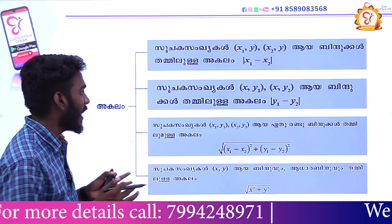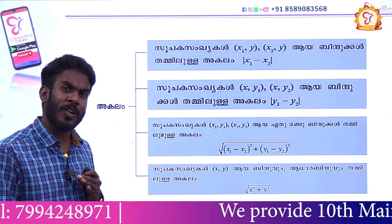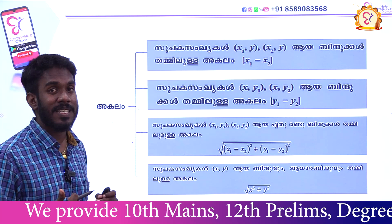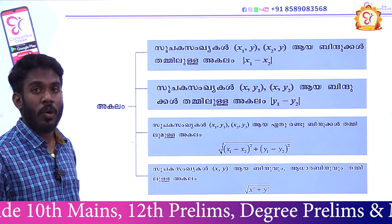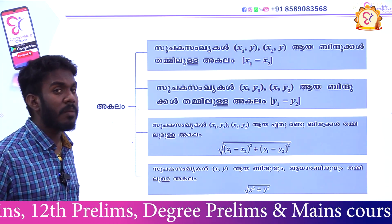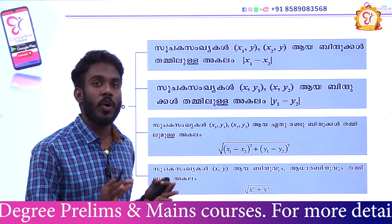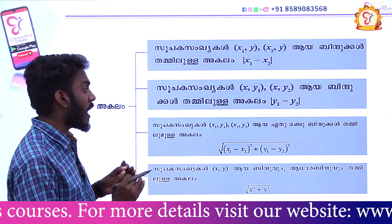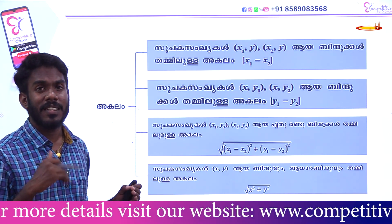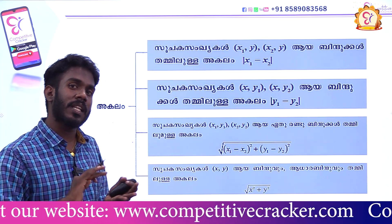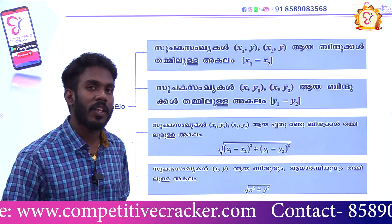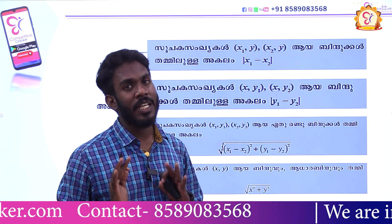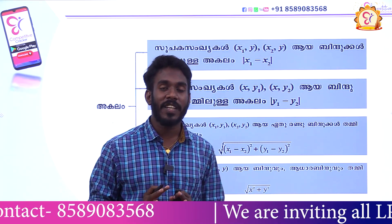For the general case with x1, y1 and x2, y2, we use the root of x1 minus x2 the whole square plus y1 minus y2 the whole square. This is the most important formula. The special case from the origin gives us the root of x squared plus y squared.